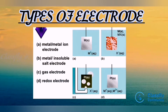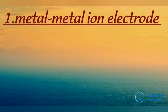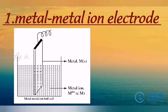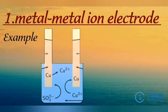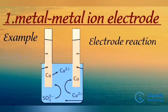Metal-metal ion electrode: a metal strip is kept in contact with the solution of a water-soluble salt containing the cation of the same metal. This electrode consists of a pure metal M in contact with the solution of its cation M(n+). For example, a silver rod immersed in a solution of Ag+ ions, or a copper rod in copper sulphate solution. The electrode is represented as M | M(n+).